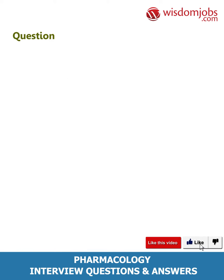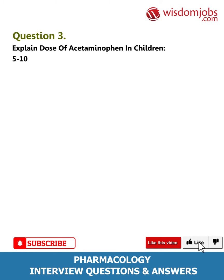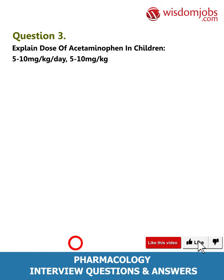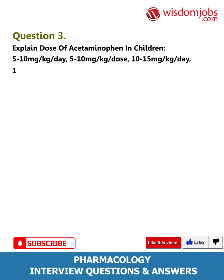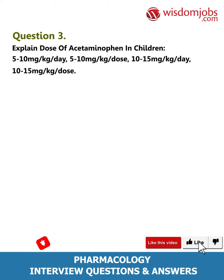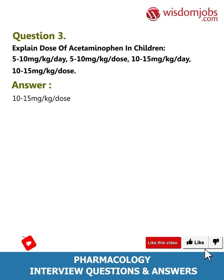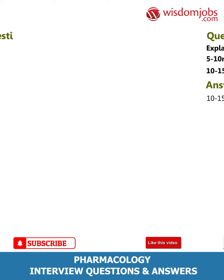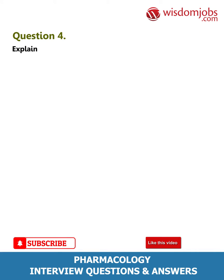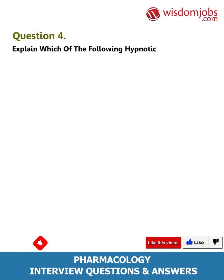Question 3: What is the dose of acetaminophen in children? Options: 5–10 mg/kg/day, 5–10 mg/kg/dose, 10–15 mg/kg/day, or 10–15 mg/kg/dose? Answer: 10 to 15 milligrams per kilogram per dose.